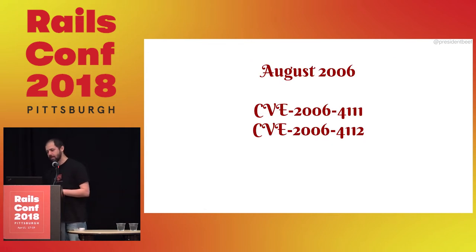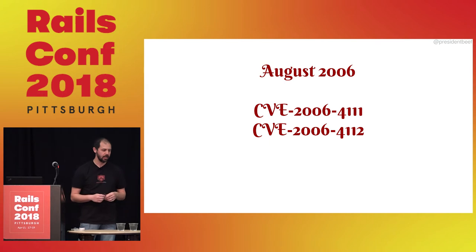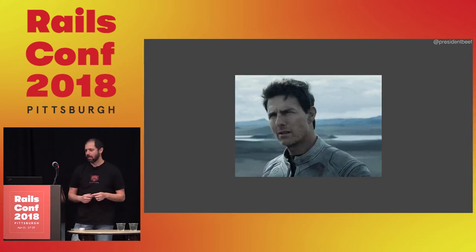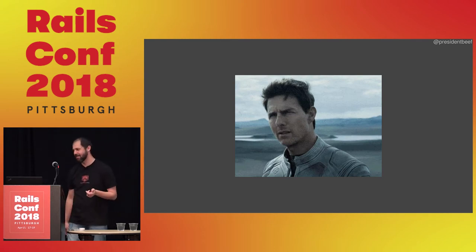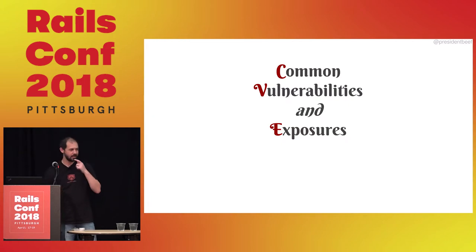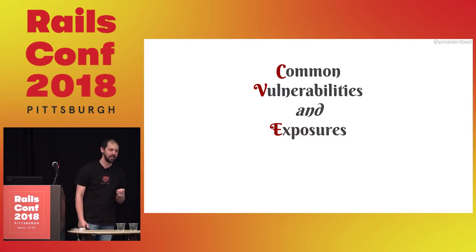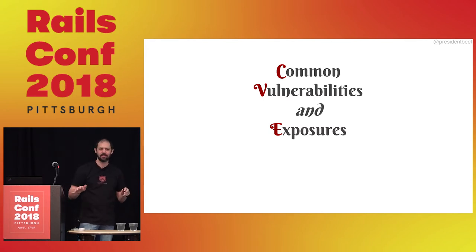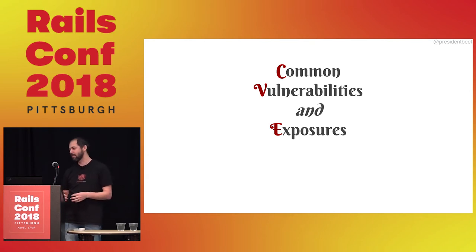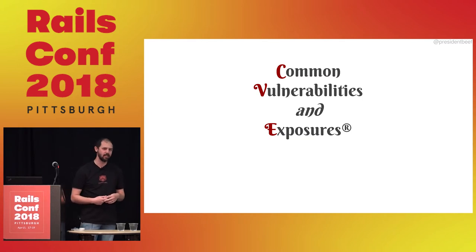August 2006 — less than a year later — the first CVEs for Rails were announced. If you're wondering what CVEs are, I always forget what CVE stands for because in the security world we just call them CVEs. They're CVE identifiers — Common Vulnerabilities and Exposures — which is a registered trademark of a company called MITRE, which essentially manages these things.